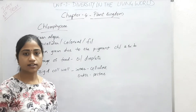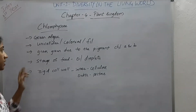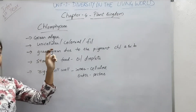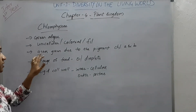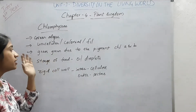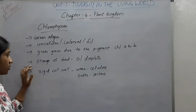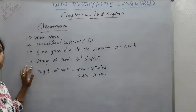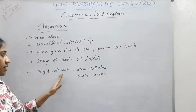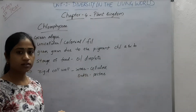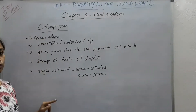Let us see the characteristics of Chlorophyceae. Chlorophyceae are commonly called green algae. They are unicellular, colonial or filamentous. They are usually grass-green in color due to the dominance of chlorophyll pigments. They store food material in the form of oil droplets. They have a rigid cell wall with two layers — the inner layer made up of cellulose and the outer layer made up of pectin.